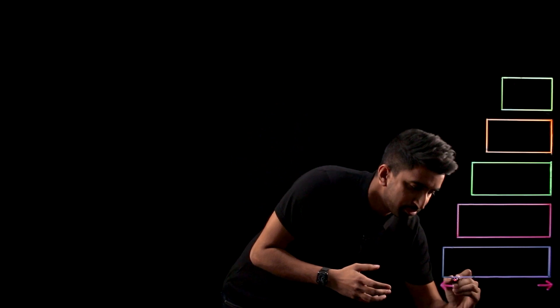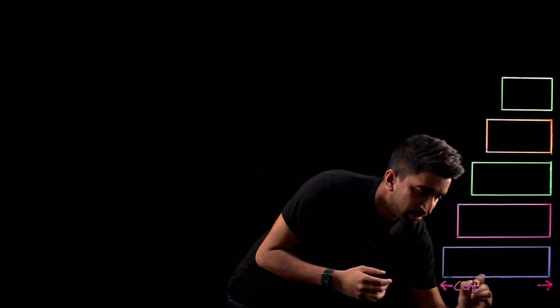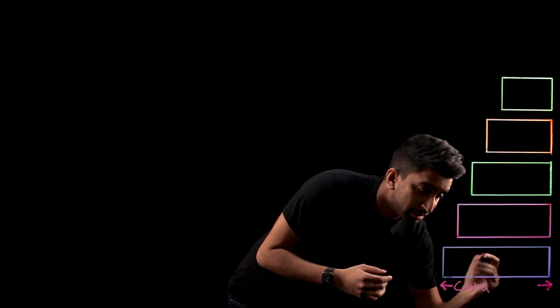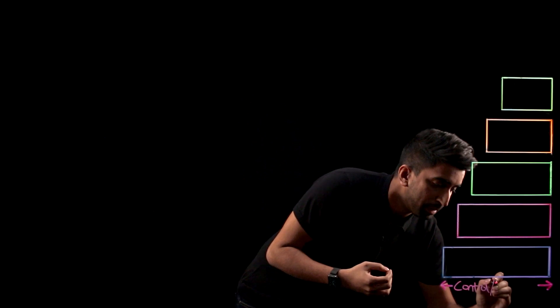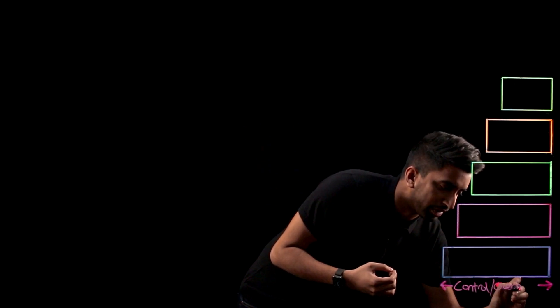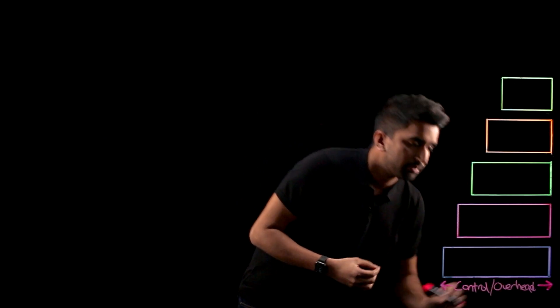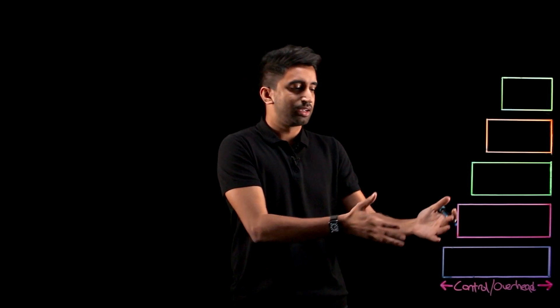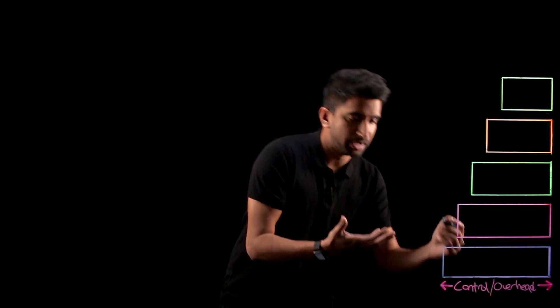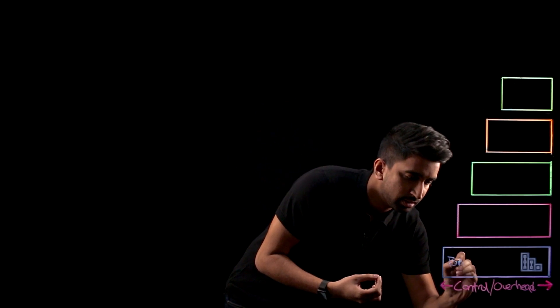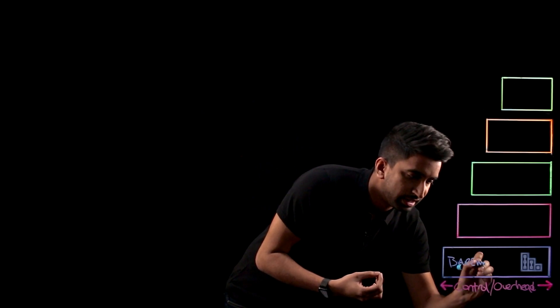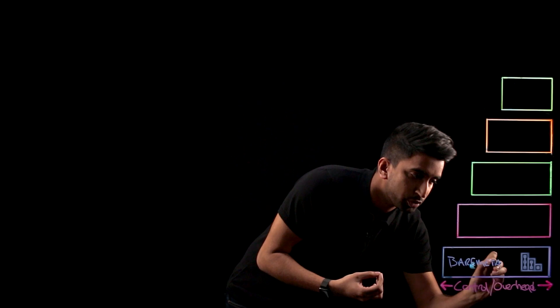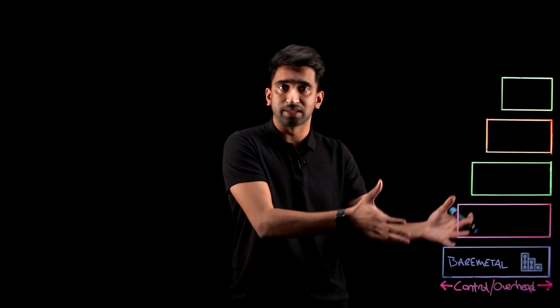So, as the box gets bigger here, there's more control, but that comes with more overhead. Now, let's start with the biggest box, where we've got things like bare metal. With this, you're going to have the most control, but that also comes with a lot of overhead to actually maintain those instances.